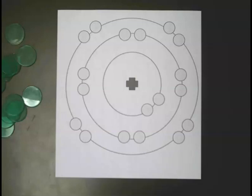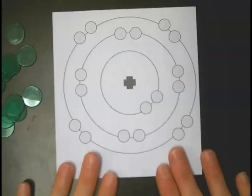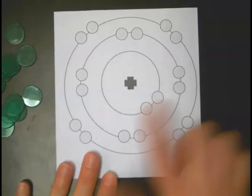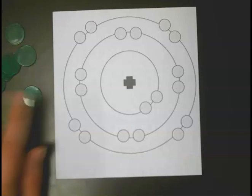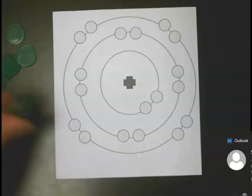I'm going to give you a brief overview of how to do the activity with the Bohr model, which is this series of circles here, and bingo chips. In this activity, the bingo chips are going to represent our electrons.